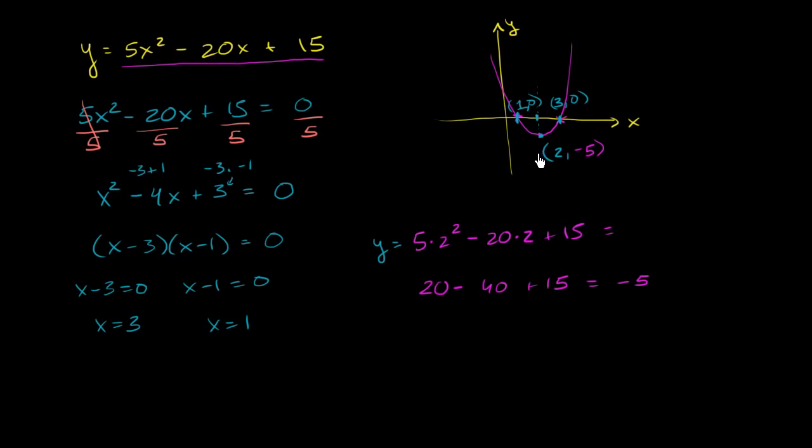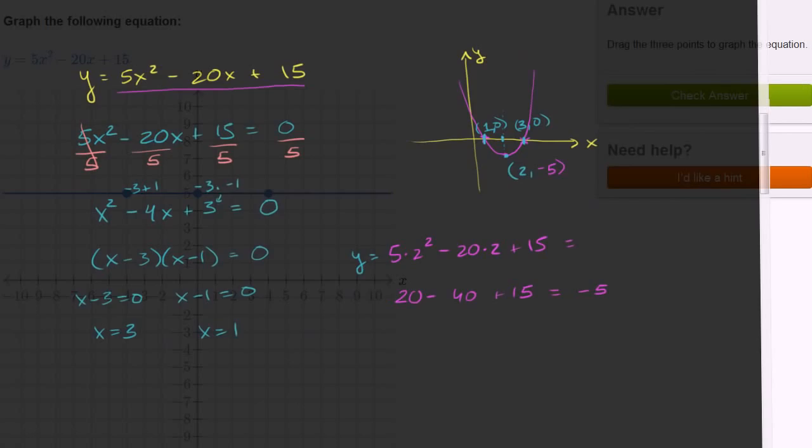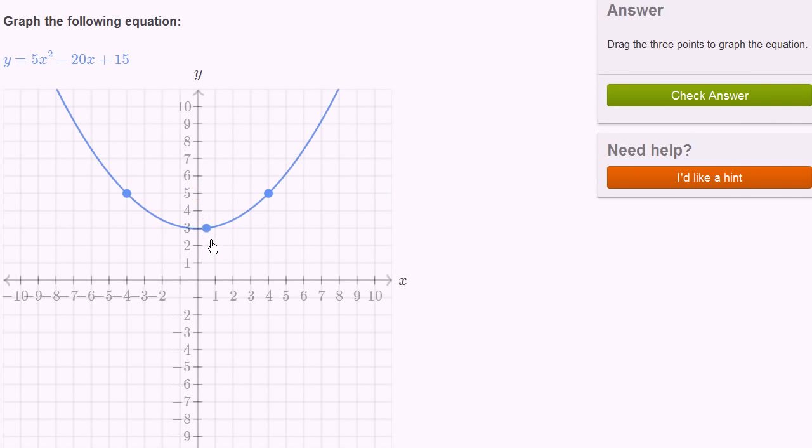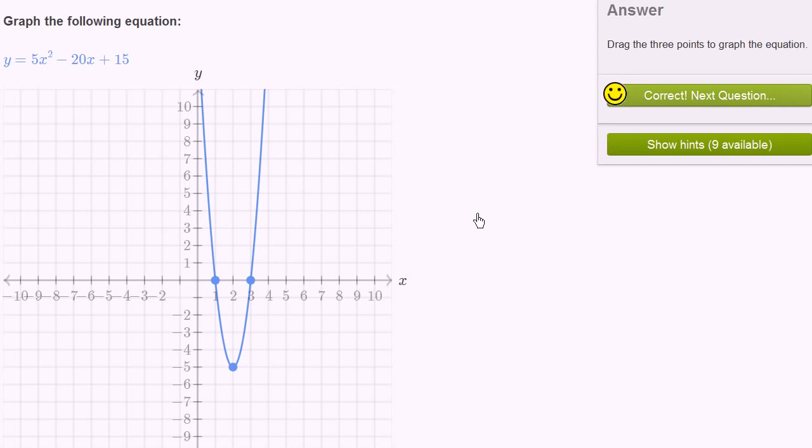So this is the point 2 comma negative 5. And so now we can go back to the exercise and actually plot these three points: 1 comma 0, 2 comma negative 5, 3 comma 0. So let's do that. So first I'll do the vertex at 2 comma negative 5, which is right there. And now we also know one of the times that intersects the x-axis is at 1 comma 0. And the other time is at 3 comma 0. And now we can check our answer and we got it right.